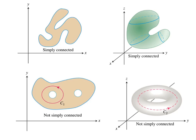Over here on the right we have the three-dimensional version. In the upper right we have a simply connected example, meaning that any path within that domain could be contracted to a point without ever leaving the domain. Whereas in the lower right we have an example of a three-dimensional object that is not simply connected.